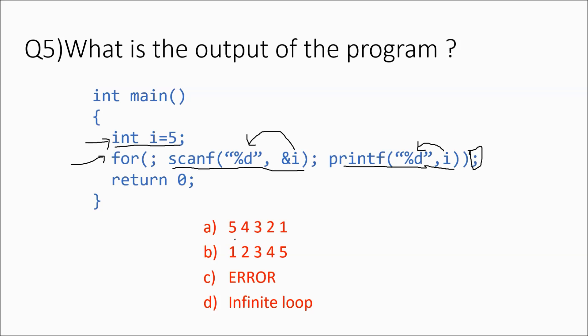Looking at the options: A) 5,4,3,2,1; B) 1,2,3,4,5; C) an error because scanf is in the condition; D) infinite loop. The compiler initializes i to 5, then enters the for loop's condition — scanf takes an integer input and stores it in i, replacing the 5. Since there are no loop body statements, control goes directly to the increment section where printf prints i. Then it loops back to scanf again — this repeats infinitely. Option D, infinite loop, is the answer.